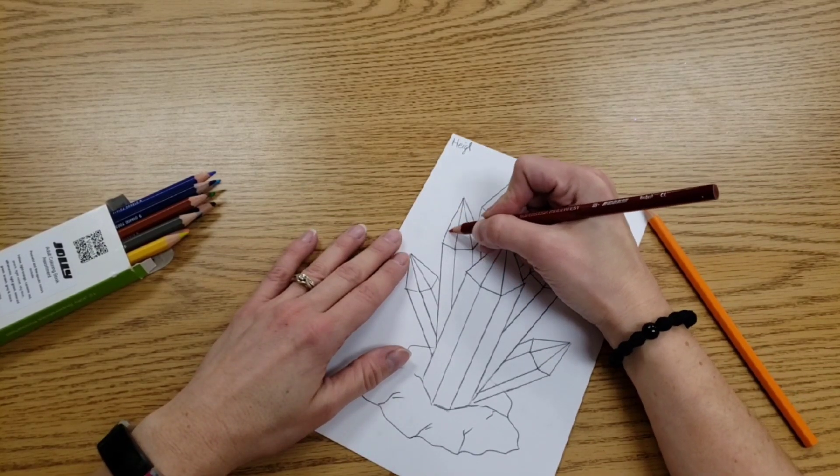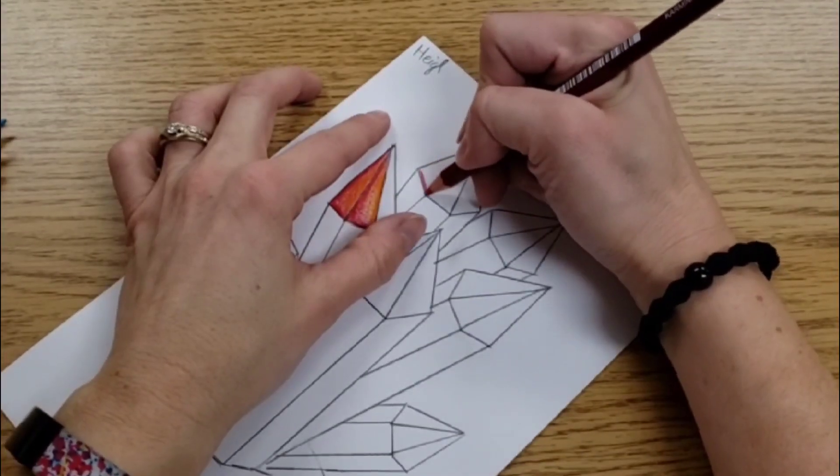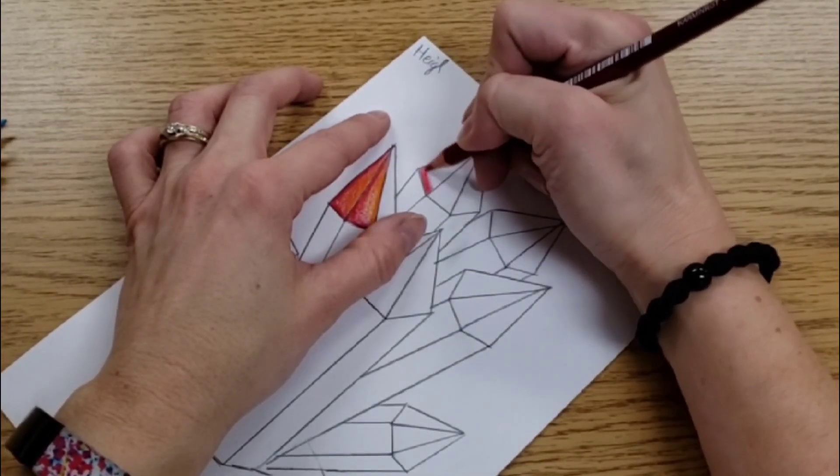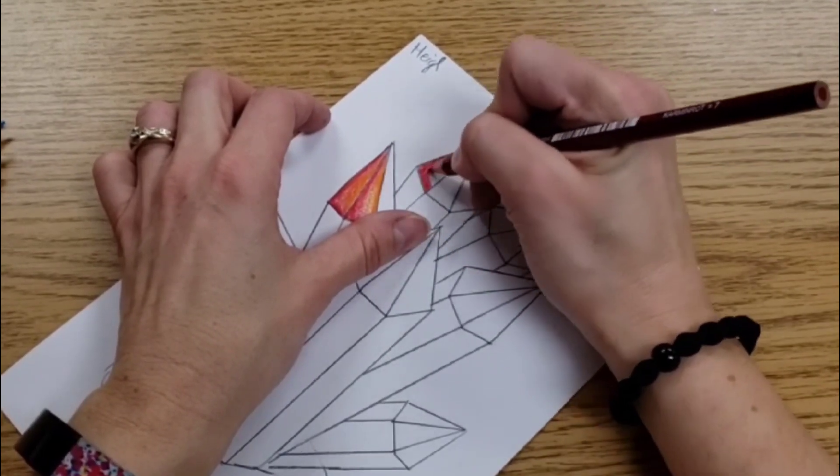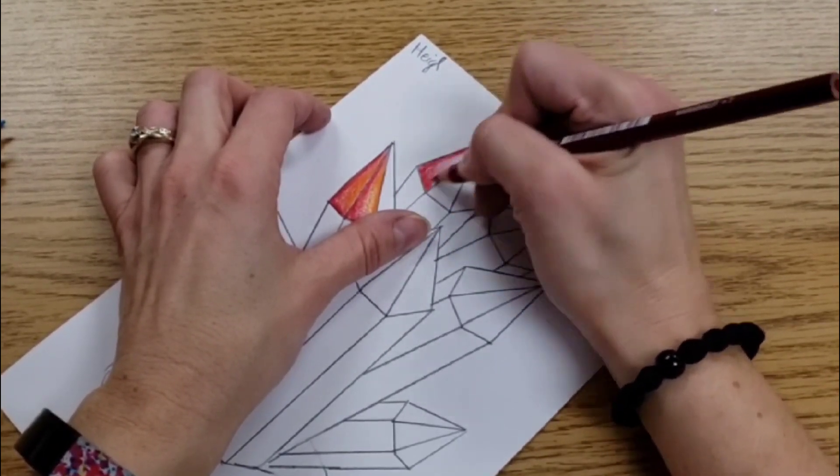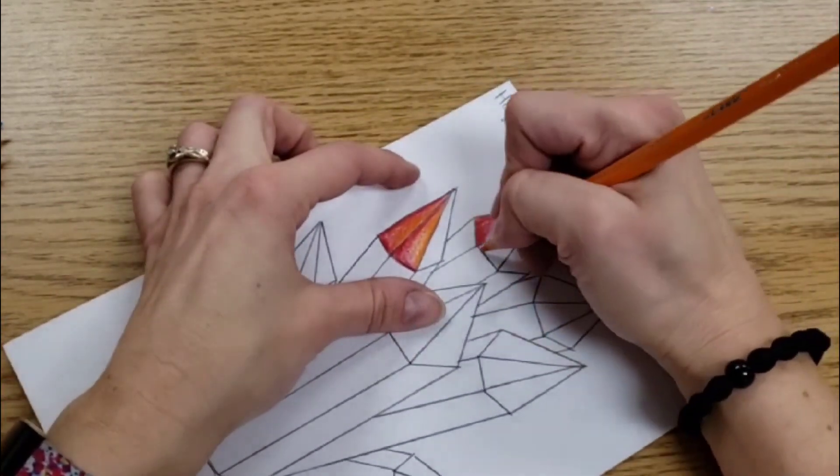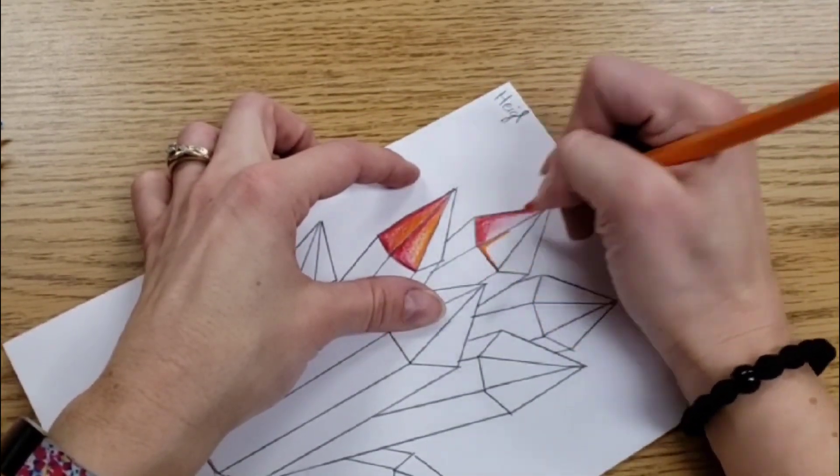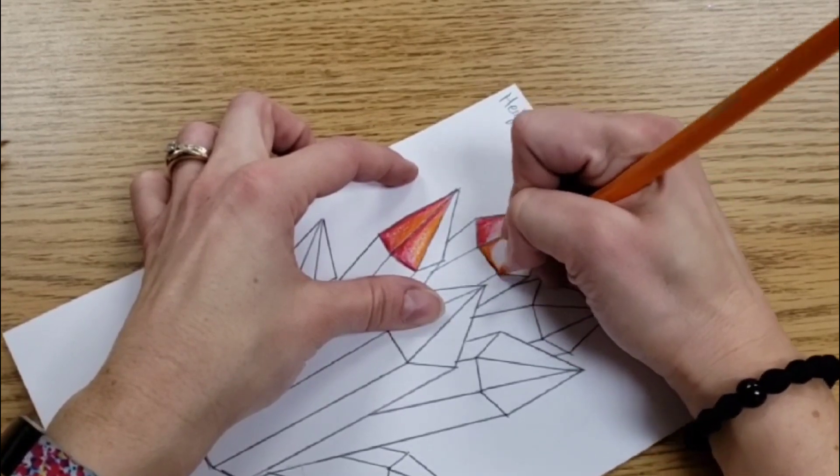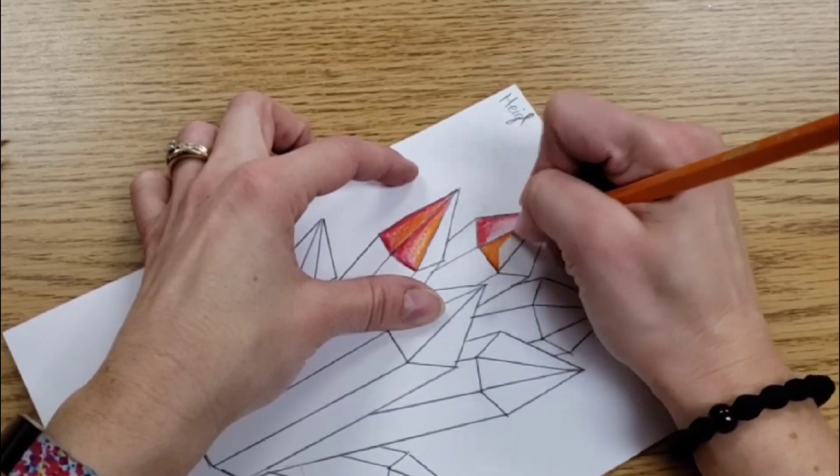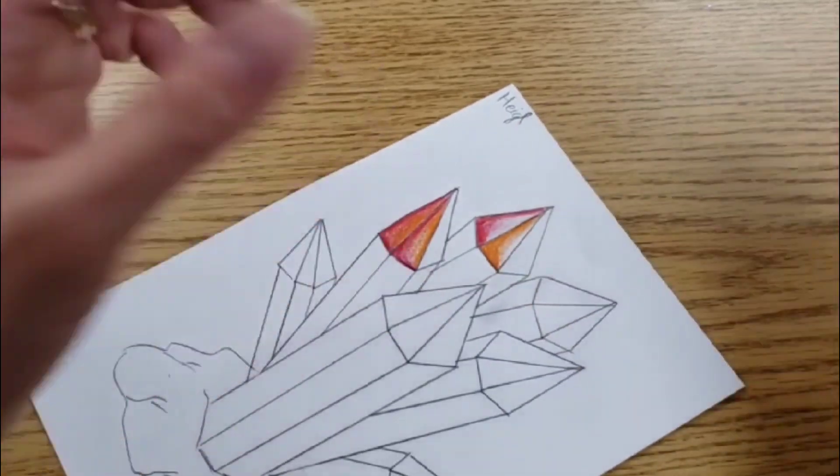So we're coloring inside the little sections you created. If you wanted you could make it so maybe this one is just the red. You fade it out so it's super light and then the one next door is orange, and also fade it out until it gets super light.